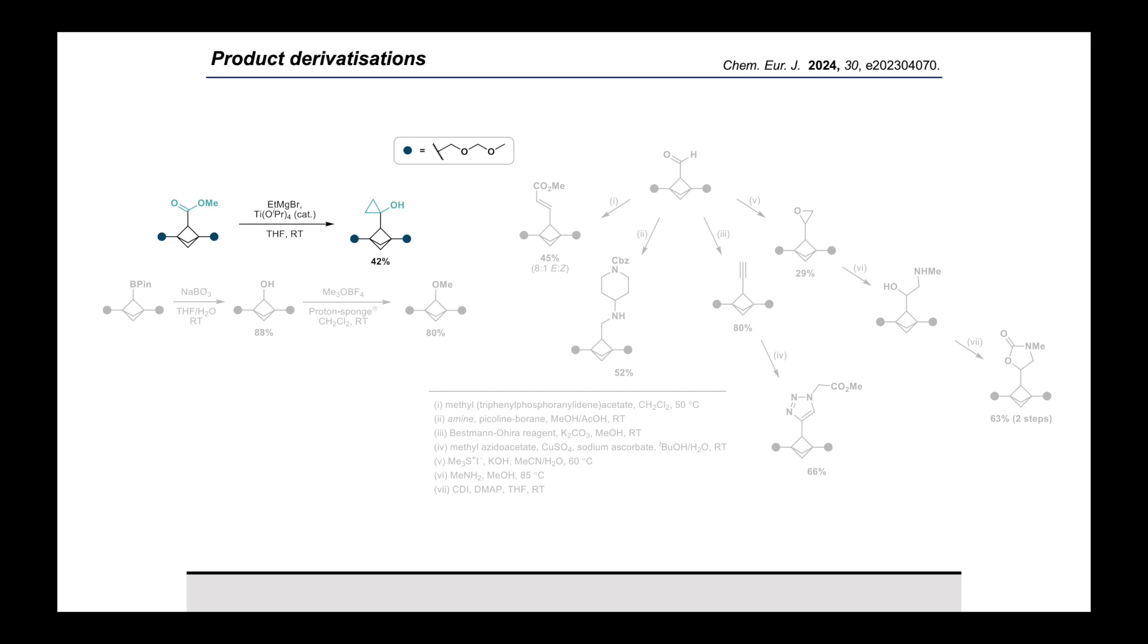Finally, to explore further synthetic utility of our BCP products, we explored a range of derivatizations at the bridge positions. To start, the methyl ester was converted into the corresponding cyclopropanol under Kulinkovich conditions. Then, oxidation of the boronic ester with sodium perborate gave the corresponding alcohol, with which we were able to show the first example of a direct alkylation of a BCP-bridge hydroxyl group by treatment with trimethyloxonium tetrafluoroborate. It's worth highlighting that alkylation of these alcohols is generally not trivial, since they undergo immediate ring opening to give the cyclobutanone upon deprotonation. The BCP aldehyde was converted to the enoate and the amine shown, through Wittig and reductive amination reactions, respectively.